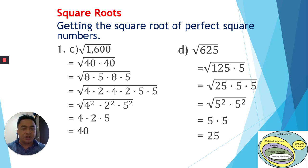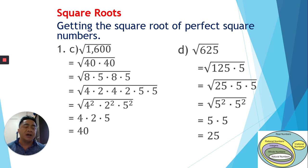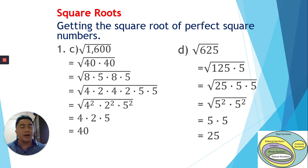To summarize how to get the square root of perfect square numbers: use the tree diagram or short division method, factoring with prime numbers. Find factors that can be written with power 2, because once a factor has power 2, it can be moved outside the radical sign — the power 2 cancels with the radical sign's value of one-half. I hope you understand, and see you in the next video!